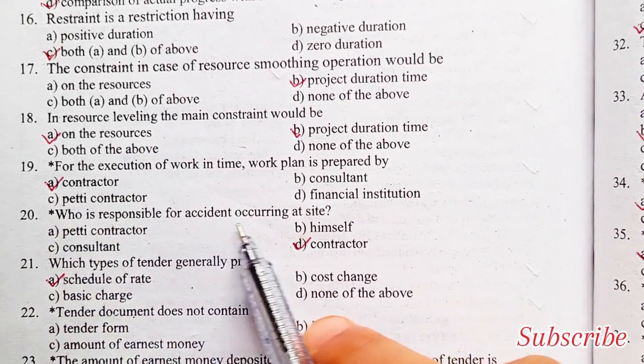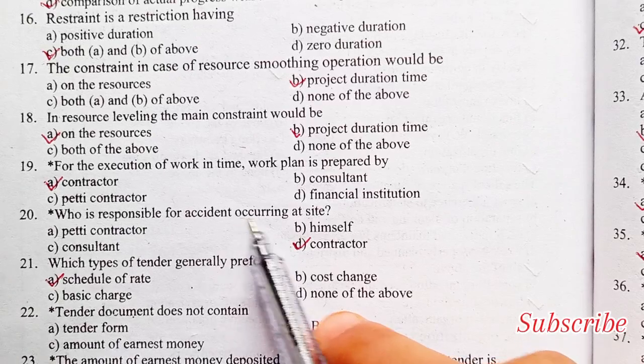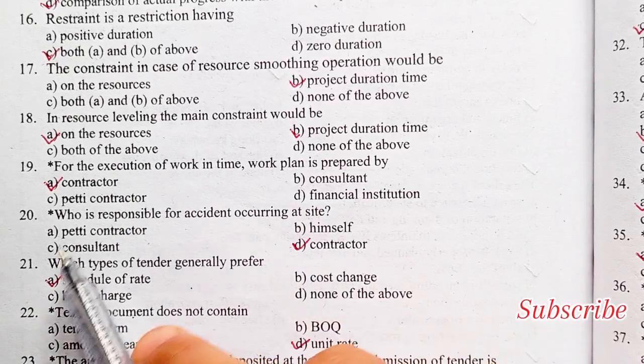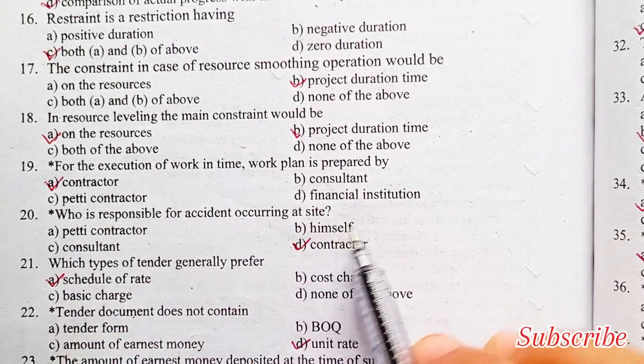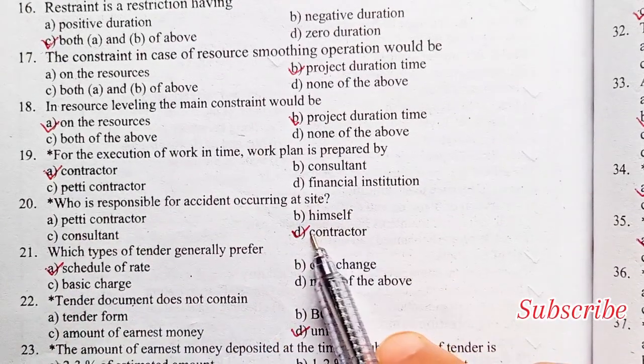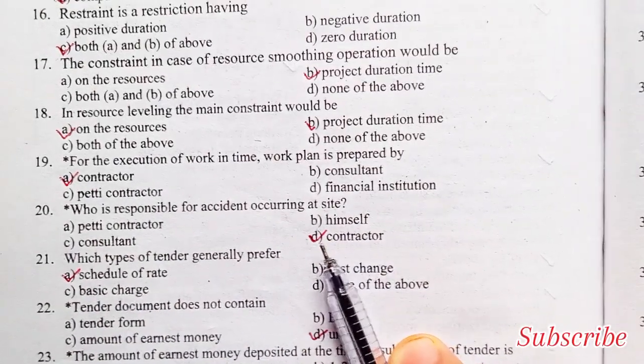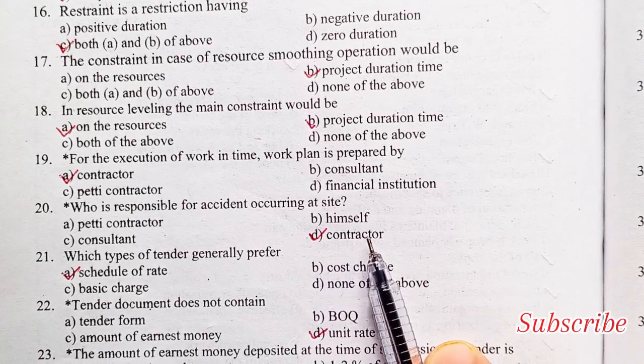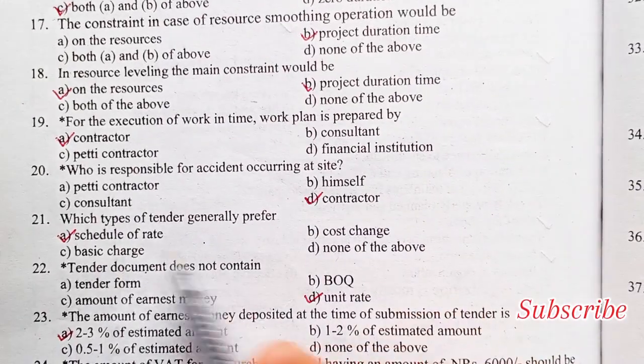Who is responsible for an accident occurring at a site? PT contractor himself, consultant, contractor. Option D is the right answer.